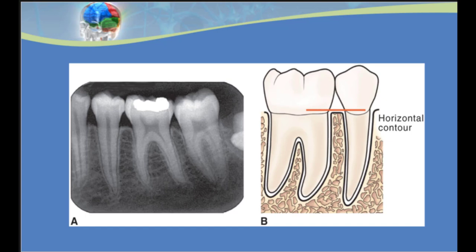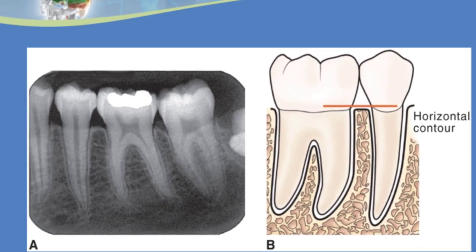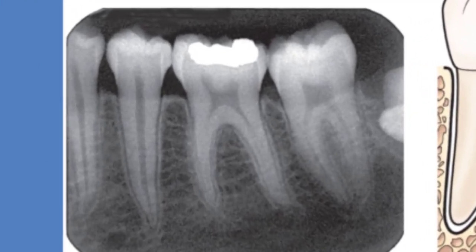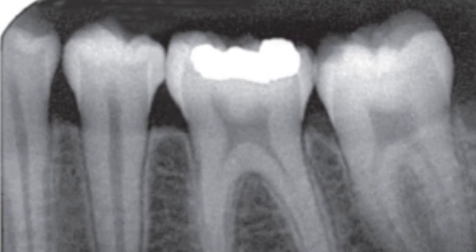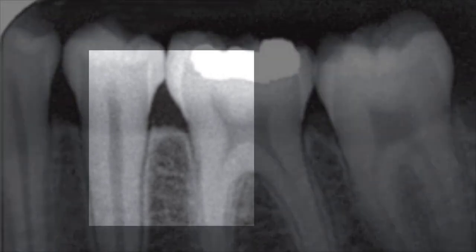Now let's talk about the alveolar crest, which is an important component in analyzing the periodontium because early changes in this anatomy can give us warning signs of periodontal disease. The alveolar crest is a dense compact bone at the height of the alveolar process between two neighboring teeth. On a radiograph we should see its dense nature compared to the trabecular bone of the interdental alveolar bone. We want the alveolar crest to be rounded or flat.